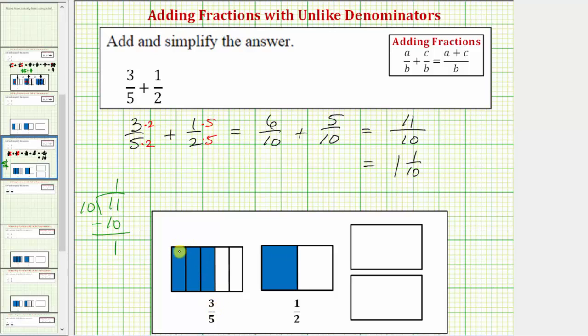So if we take each part that's equal to one fifth here and cut it into two pieces. Here, here, here and so on. This shows three fifths is equivalent to six tenths, which we have here.